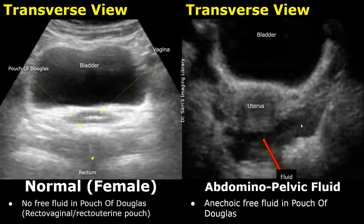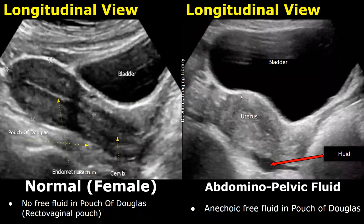In a trauma patient, you can also examine the pelvic region in a longitudinal view. Here we see no fluid behind the uterus, and over here we can see some anechoic fluid in the pouch of Douglas.